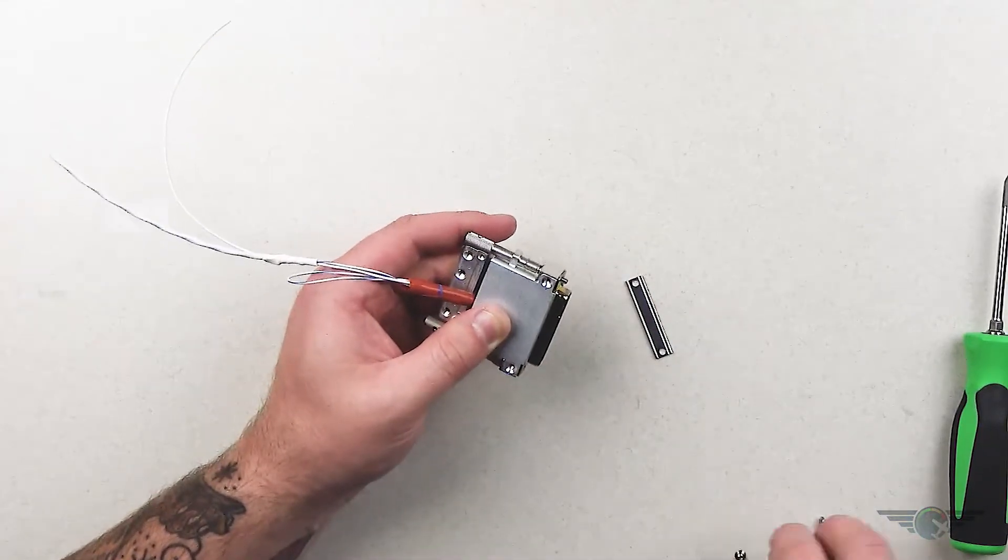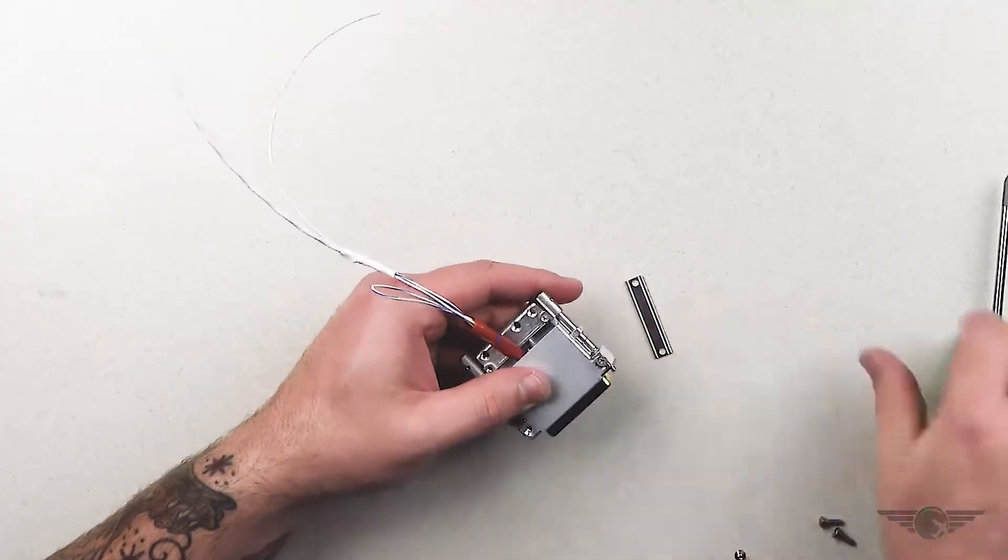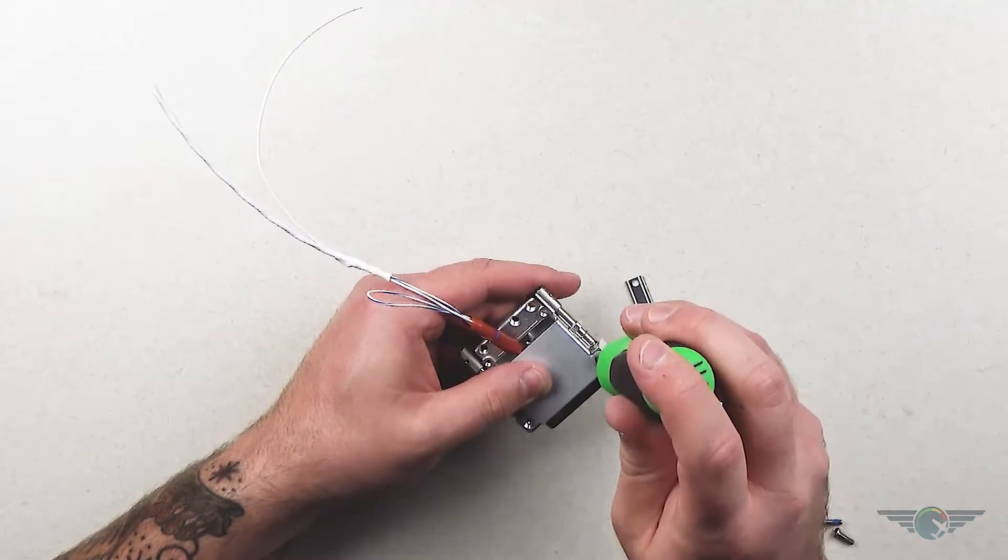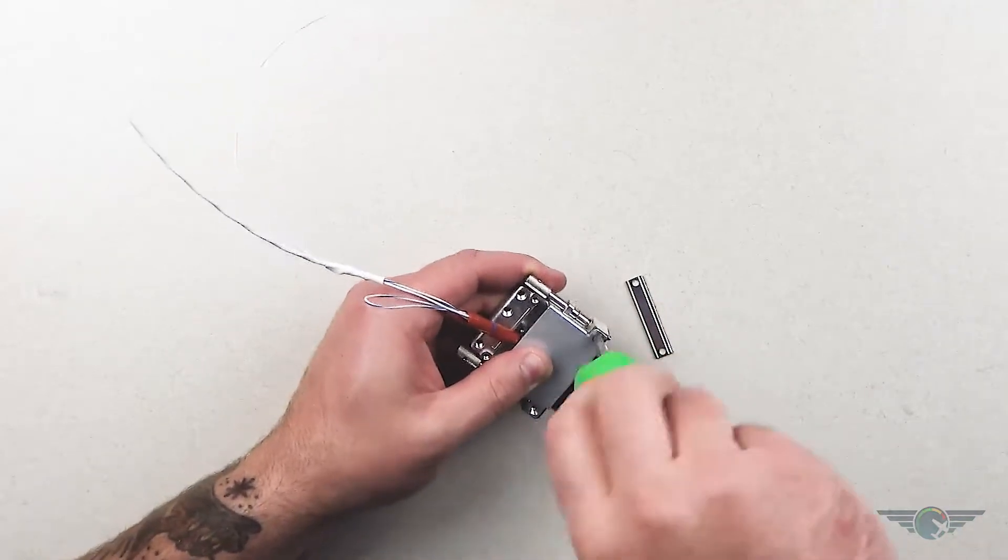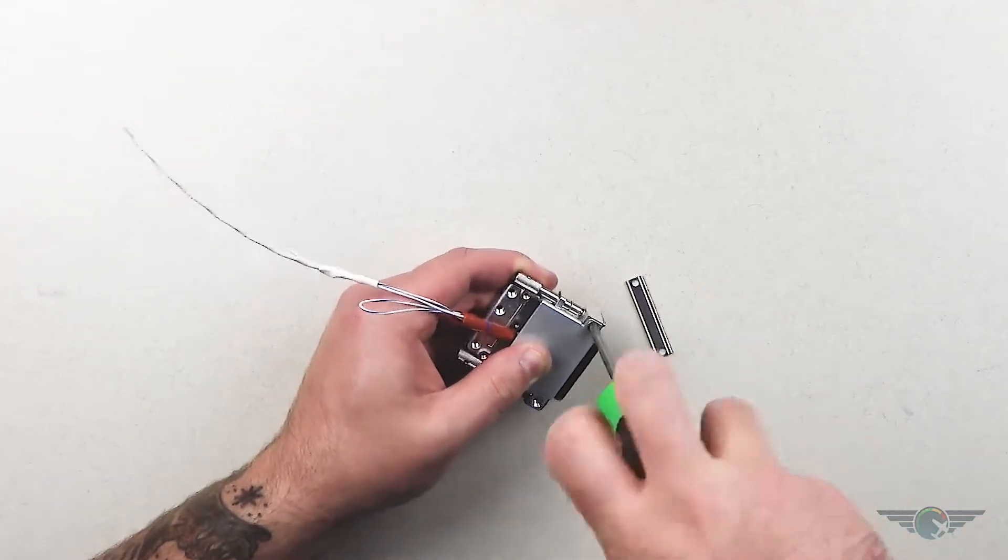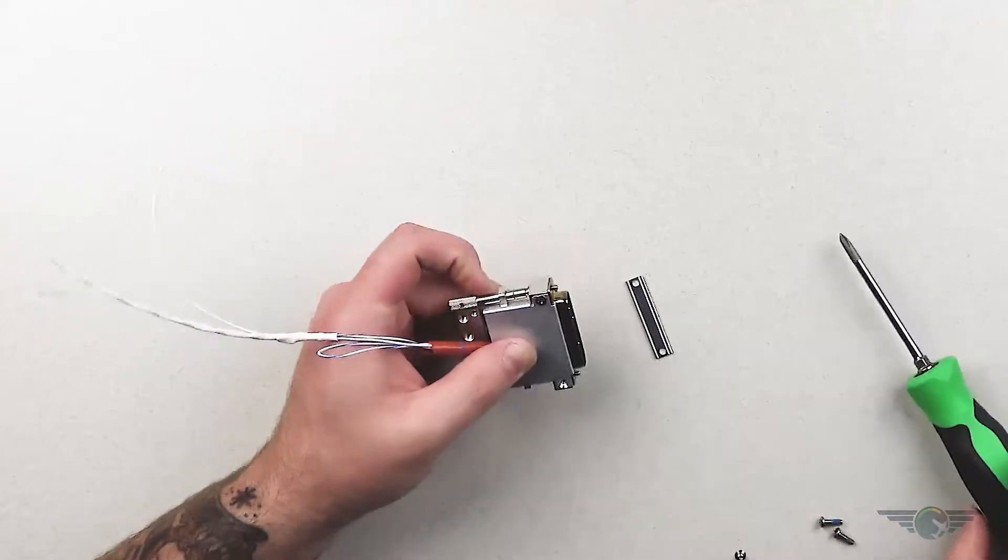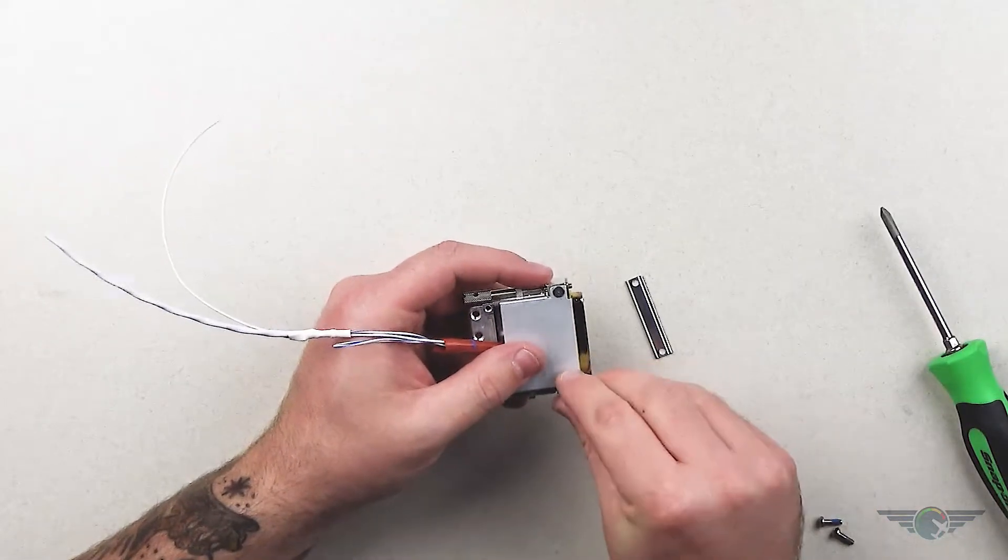And then my little countersunk screws go in these holes. So I'm going to take my number one here, tighten that up, and do the same with this.